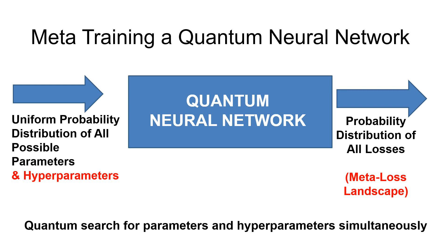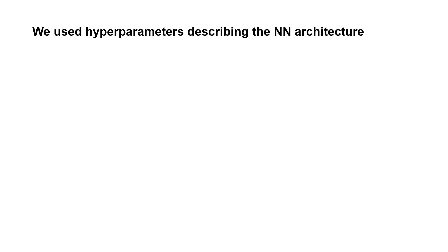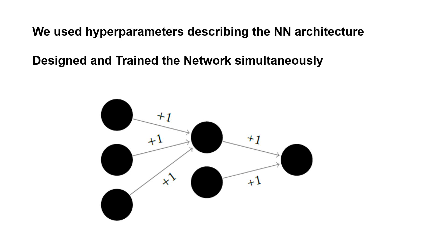Quantum searching in the exact same way gives parameters and hyperparameters simultaneously. We used hyperparameters describing the neural network architecture. We designed and trained the network simultaneously, and this image shows one result. The design of the network and the weights were found at the same time using our quantum search algorithm.